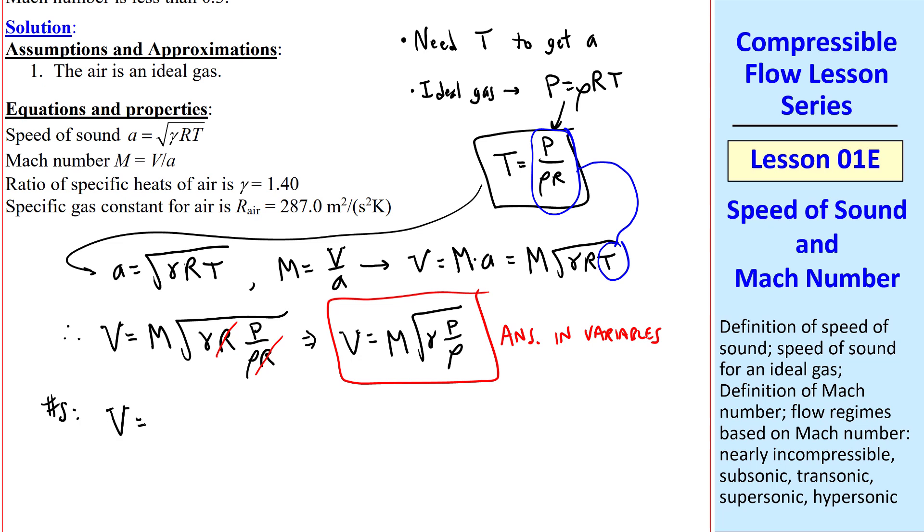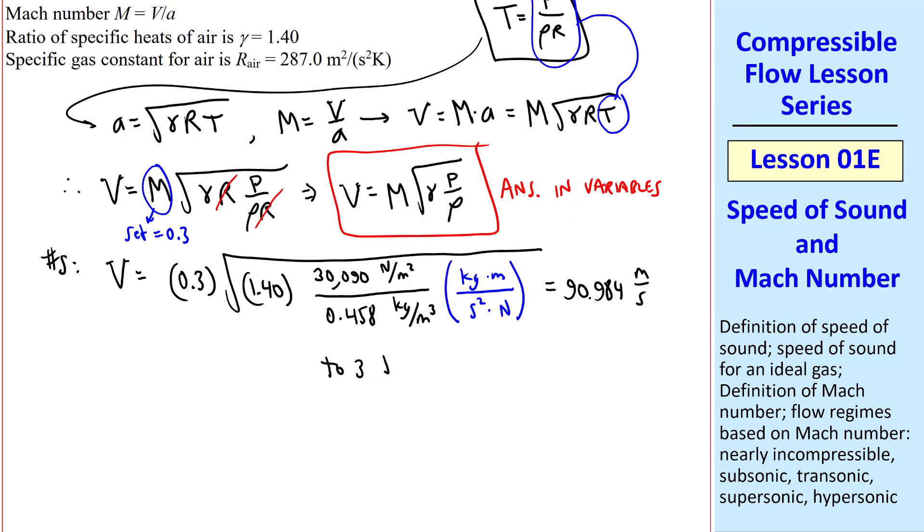And when I plug in the numbers, I set the Mach number to 0.3, since that's our approximate incompressible limit. So V equals 0.3 square root of gamma, 1.40. So the pressure was given, which I write in newton per meter squared, or pascals, instead of kPa. The density was given, and we need one unity conversion factor, our common one, kilogram meter per second squared newton, which gives me 90.984 meters per second, which we can write to three digits for our final answer. V is 91.0 meters per second.